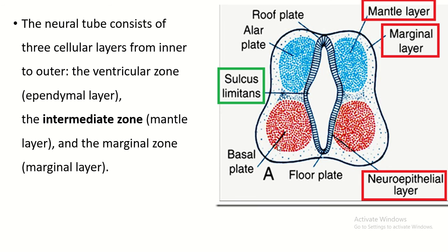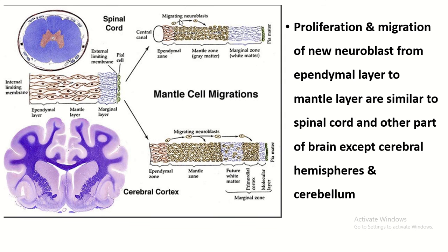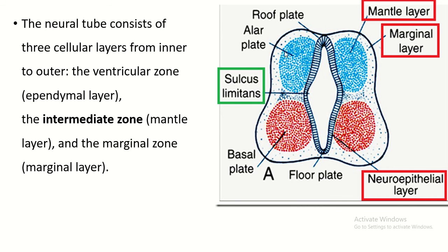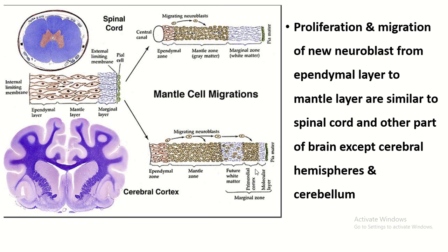The mantle layer is converted into four masses of tissue. The tissue between the roof plate is known as the alar plate, and the tissue near the floor plate is known as the basal plate. In the spinal cord, the entire mantle layer is converted into the gray matter of the spinal cord, and the entire marginal layer is converted into the white matter. The alar plate deals with the sensory system and forms the dorsal horn of the spinal cord; the basal plate forms the ventral horn. The cavity of the neural tube is converted into the central canal.